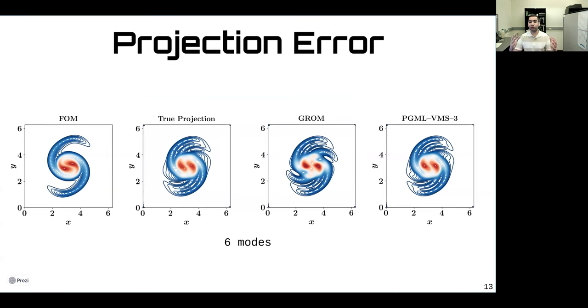Here, we can see the prediction of the vorticity field at the final time with different approaches. The true projection here is the best that we could get from six modes. GROM is what we actually get due to neglecting the effect of the truncation into the ROM dynamics. In the PGML VMS3, we still use six modes, but we approximate the closure effect using the three-level VMS framework with physics-guided machine learning closure. We see that the PGML VMS3 is very close to the true projection, which means that the closure error is treated very well. However, compared to the full-order model solution, we still suffer from a large projection error. In the next two or three slides, I will introduce one way to reduce this projection error.